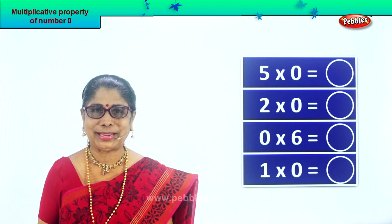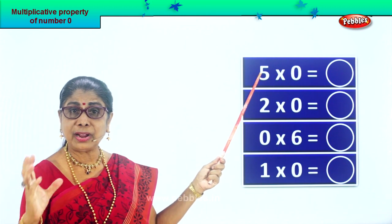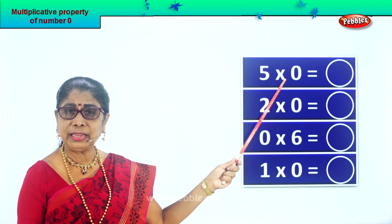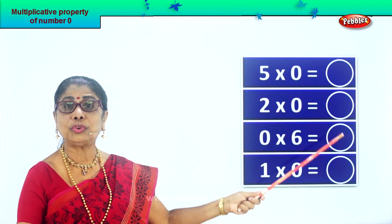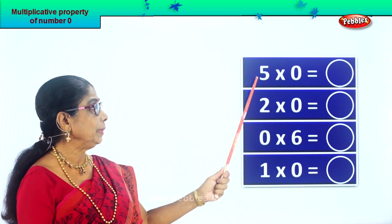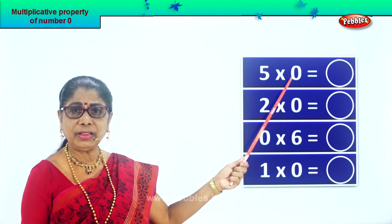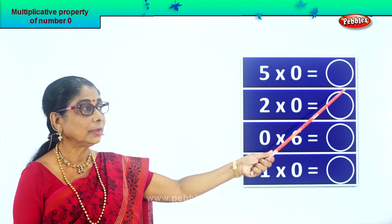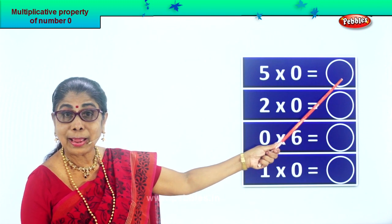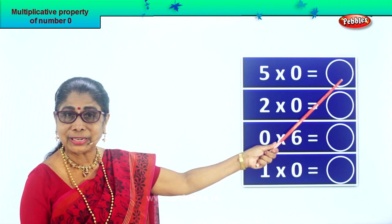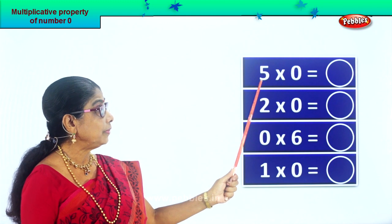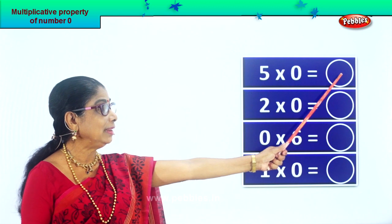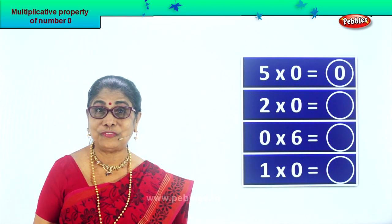Let's look at another exercise. Look what's given to us — number five multiplied by zero. Five into zero is equal to what? That's the question. Now you give me the answer — five into zero is equal to — good, zero itself. What are we learning? Multiplicative Property of Zero. Number five multiplied by zero is equal to zero, so we write in the column here: zero. Very good.